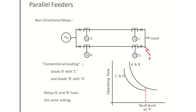We have one source and one load. This load is connected from the source through two feeders — feeder 1 and feeder 2. When discussing about non-directional overcurrent relaying, we have already seen that relay A will be graded with relay C, because A is nearer to the source and C is nearer to the load.